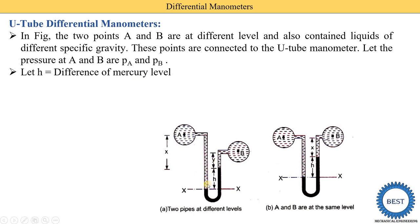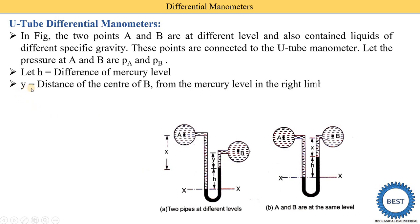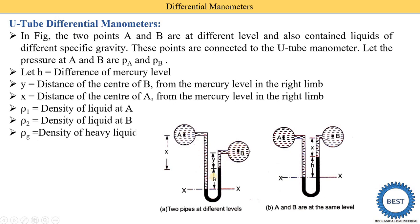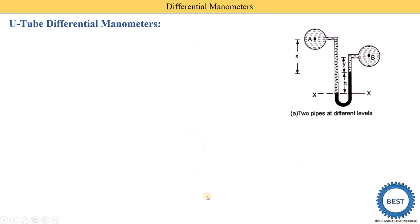Let H be the difference of mercury levels. Here we know that heavy liquid is used and as a heavy liquid we use mercury, so the difference of mercury level is denoted by H. The next term is Y — from the image it is the distance from point B to the mercury level in the right limb. Next is X — X is the distance of the center of A from the mercury level in the right limb. Next, ρ1 is the density of liquid A, ρ2 is the density of liquid B, and ρg is the density of the heavy liquid, meaning the density of mercury.